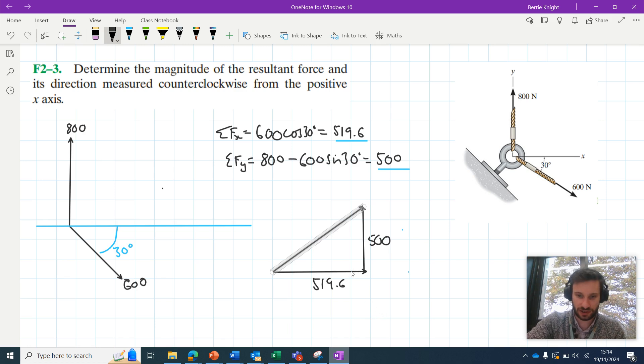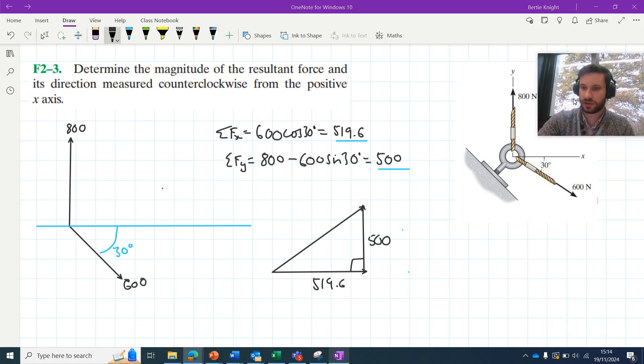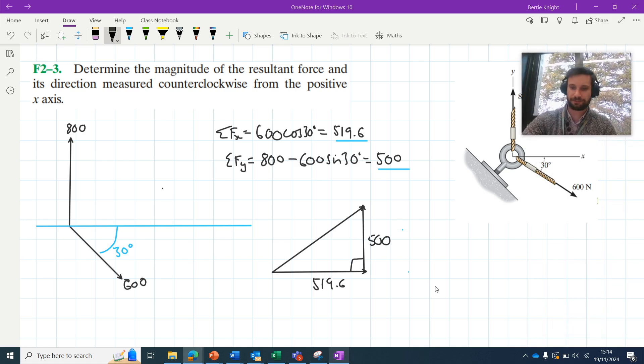Evidently, this is just like a right angle triangle, so we can use Pythagorean theorem to solve for it. Using Pythagorean theorem here, we can say that the magnitude is equal to the square root of 500 squared plus 519.6 squared, which when we put in our calculator, we find to be equal to 721.1.